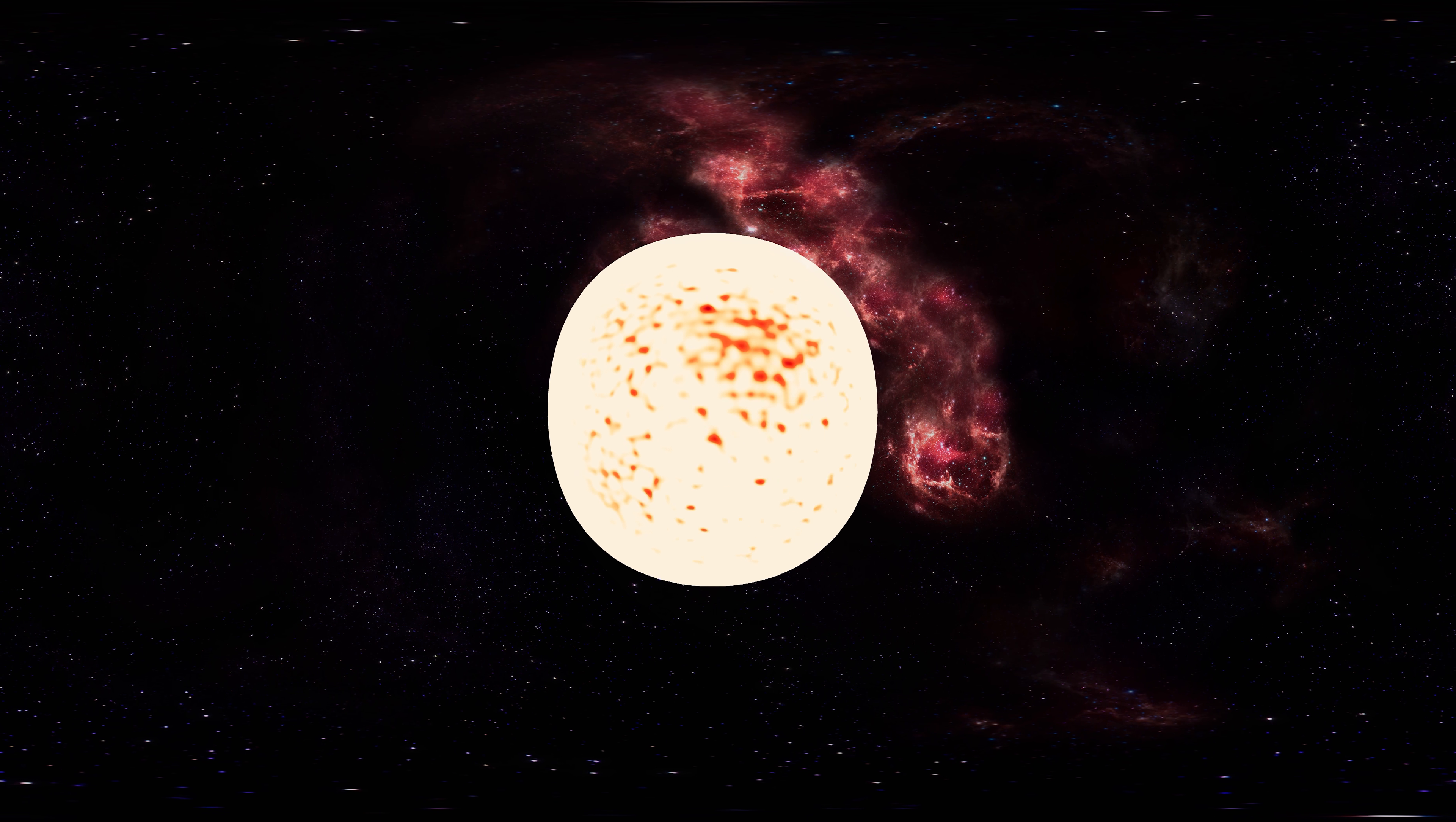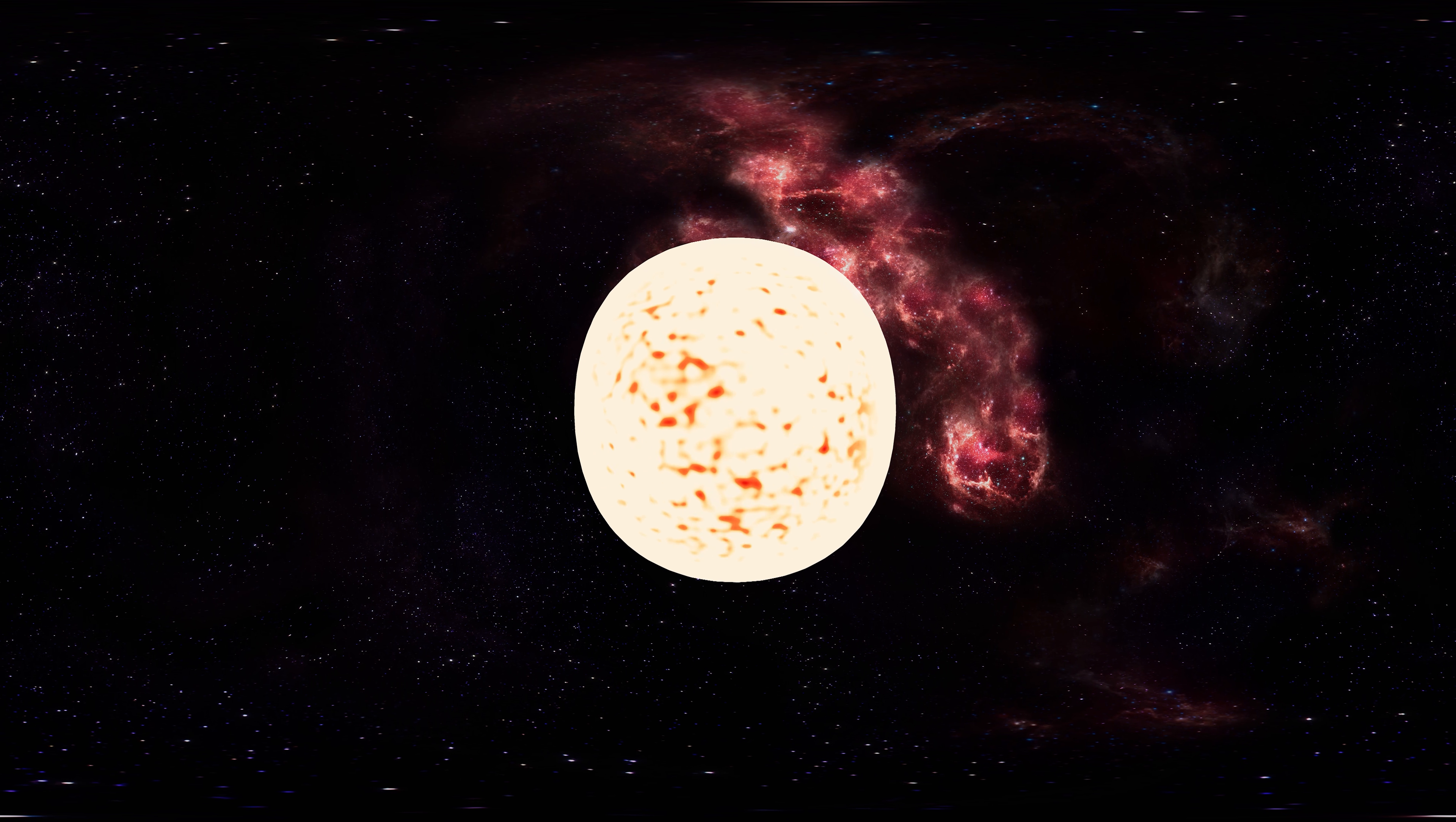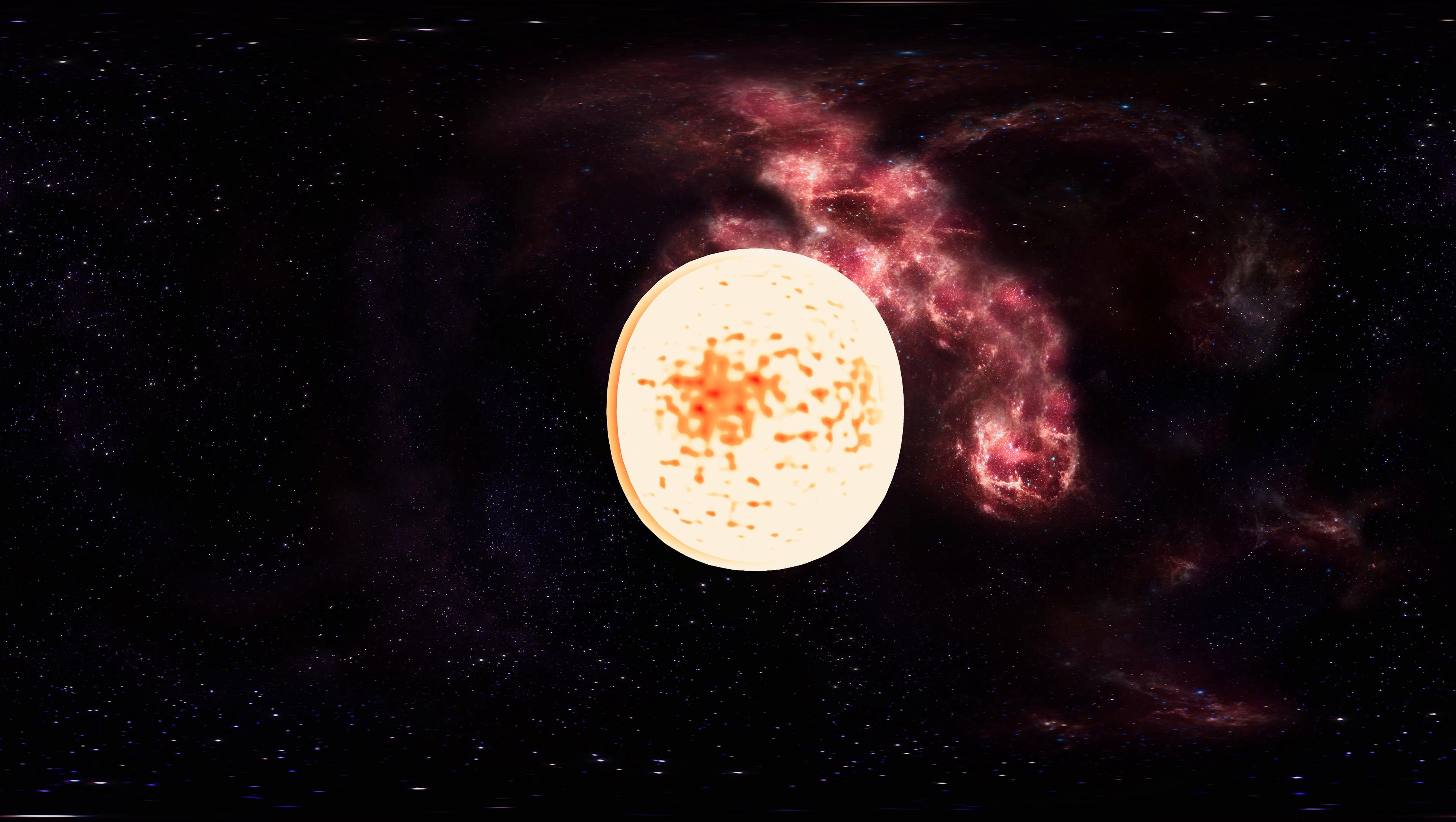The Sun lies close to the inner rim of the Milky Way's Orion arm, in the local interstellar cloud or the Gould belt, at a distance of 7.5 to 8.5 kiloparsecs from the galactic center.